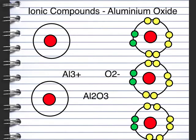There is a shortcut method: if you know the charge of the aluminium, that gives us the number of atoms in the compound. So Al3+ gives 3 oxygens, and O2- gives 2 aluminiums - you swap the charges to get the subscripts.